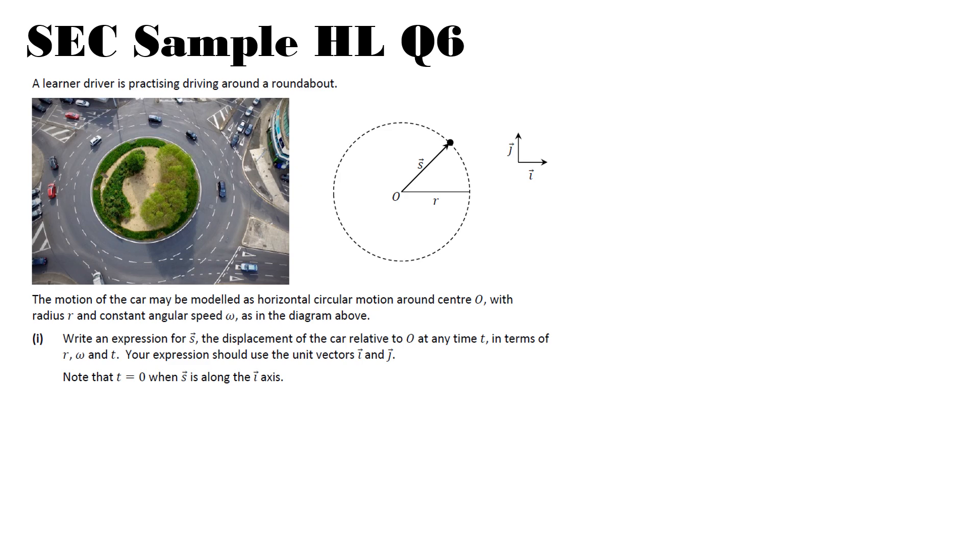This question is from the SEC sample higher level paper and it is question 6. A learner driver is practicing driving around a roundabout. The motion of the car may be modeled as horizontal circular motion around centre O with radius R and constant angular speed omega as in the diagram above. Write an expression for S, the displacement of the car, relative to O at any time T in terms of R, omega, T and your expression should use the unit vectors i and j.